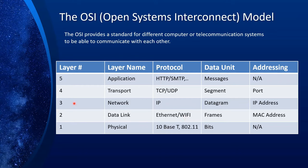Layer three is called the network layer. The protocol is IP, the data unit is datagram, and the addressing scheme is IP address. As mentioned, Ethernet can only go from one hop to the other, and that's where the network layer assists the Ethernet frames to go from source to destination — guiding how to get from one hop to the next.